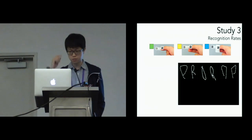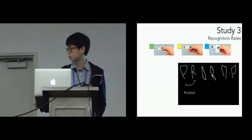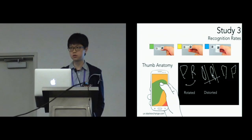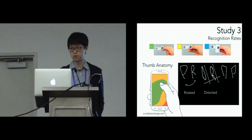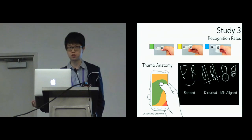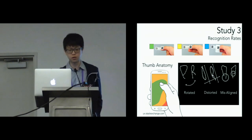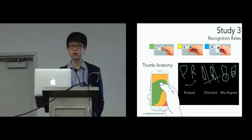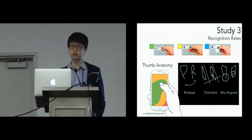We began to wonder why the results were so bad. Printing out all trajectories, we found they were usually rotated or distorted. This indicates the importance of thumb anatomy — not only does it affect possible thumb movements, but also interferes with possible moving directions. Participants unintentionally crooked, distorted, or rotated their thumb trajectory. Since tactile cues were not used, misalignment was also very serious. This indicates that rule-based recognizers like Graffiti, requiring straight lines and smooth curves, are not suitable for thumb-to-fingers touch interfaces.